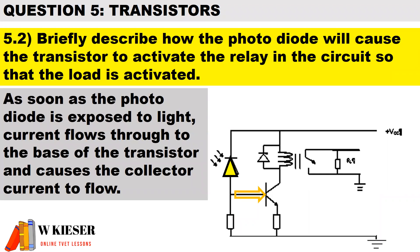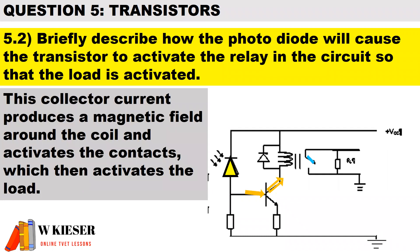As soon as the photodiode is exposed to light, current flows through to the base of the transistor and causes the collector current to flow. This collector current produces a magnetic field around the coil and activates the contacts which then activates the load.